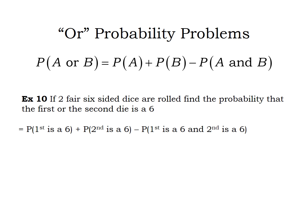Written out in the context of this problem, replacing the generic A and B: the probability the first die is a six, plus the probability the second die is a six, minus the probability the first is a six and the second is a six. The first two probabilities — P(first die is six) and P(second die is six) — are both one-sixth.